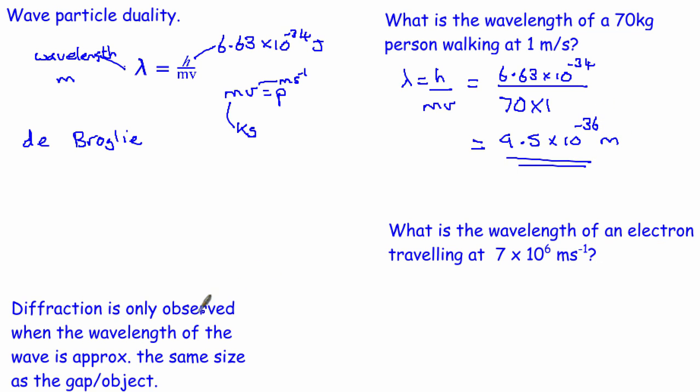So if we go back to this thing over here, diffraction is only observed when the wavelength of your wave is roughly the same size as the gap or the object. Well, this is approximately 26 orders of magnitude less than the size of an atom. It's even approximately 20 orders of magnitude less than the nucleus of an atom. So basically, a person isn't going to diffract, because there's no gaps, there's no objects that are this sort of size that a person could diffract around. So that's why a person always behaves like a solid thing and not like a wave.